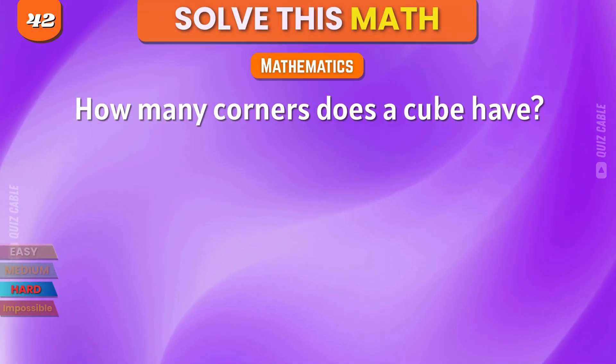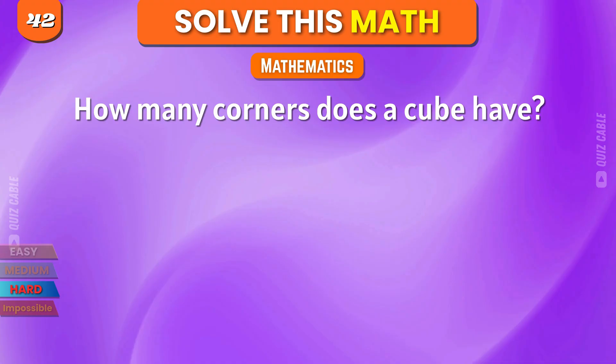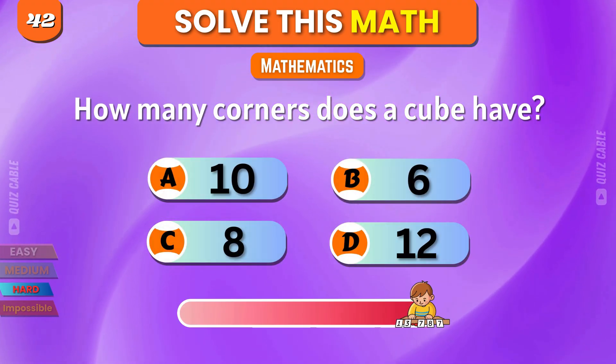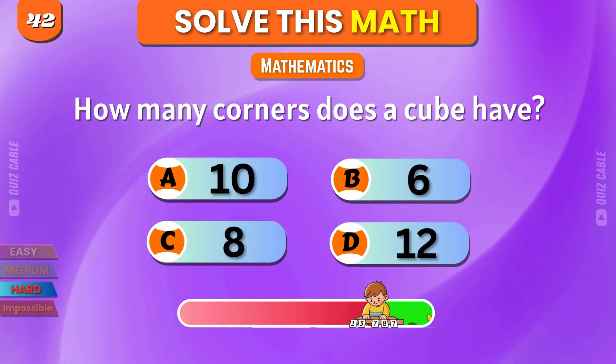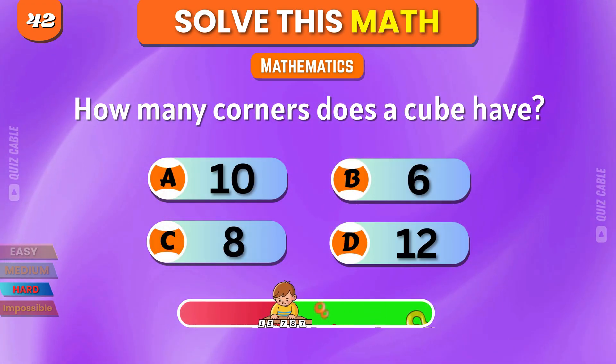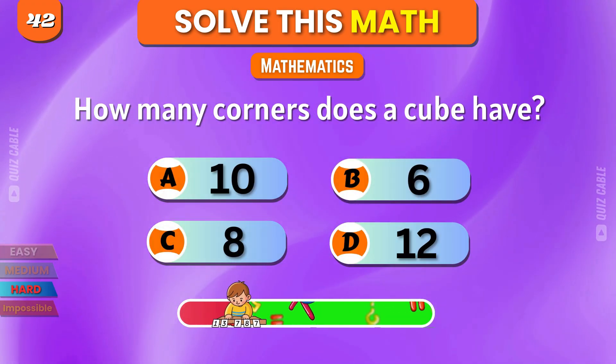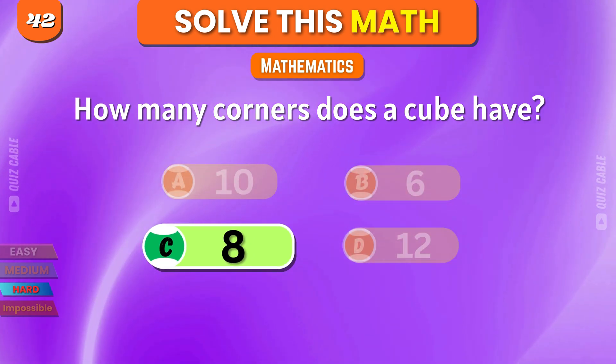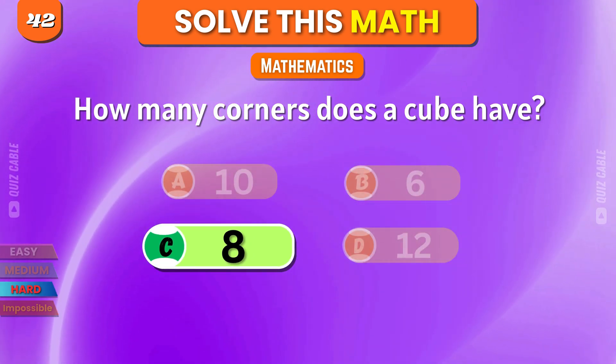How many corners does a cube have? 10, 6, 8, 12. Correct, 8.